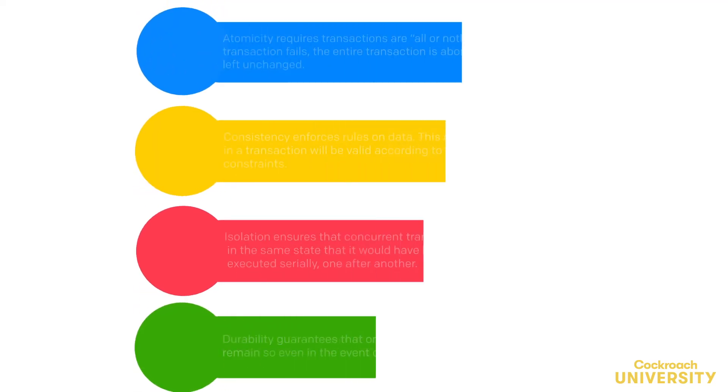All data access in CockroachDB is transactional, which guarantees data integrity. And because CockroachDB offers the strictest ACID guarantees by default, you can trust that your data will always be consistent.